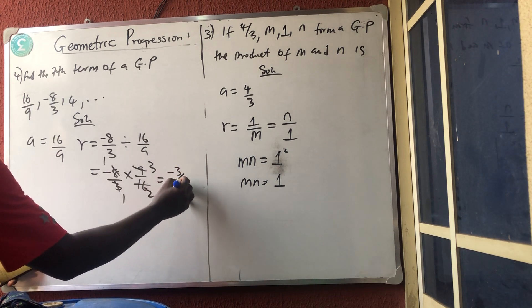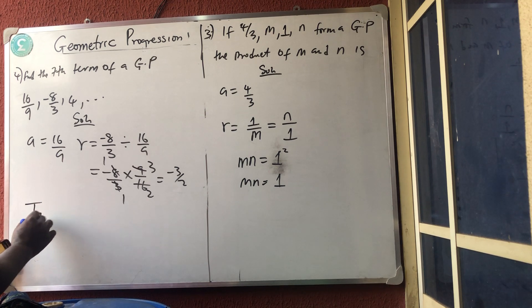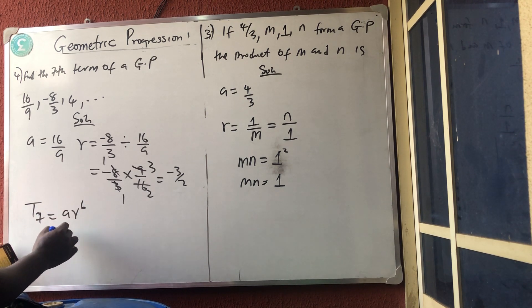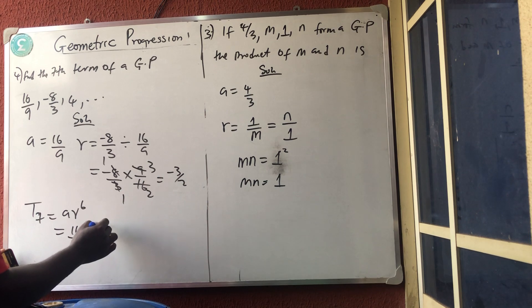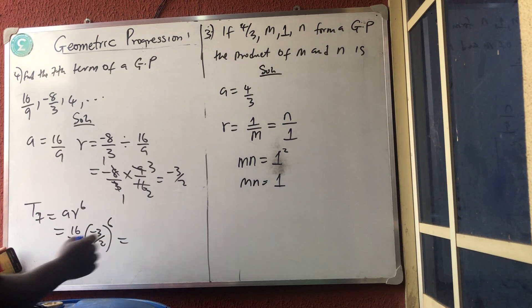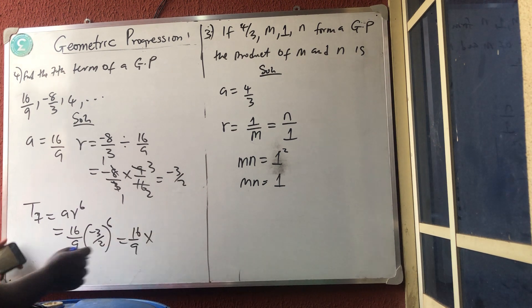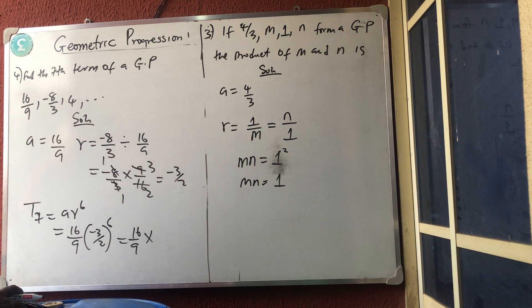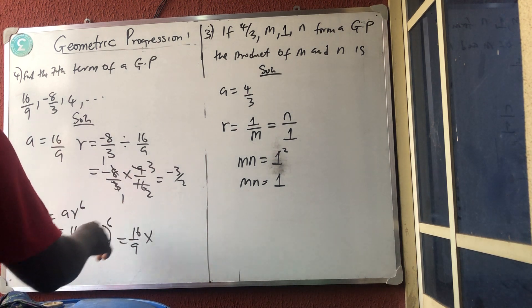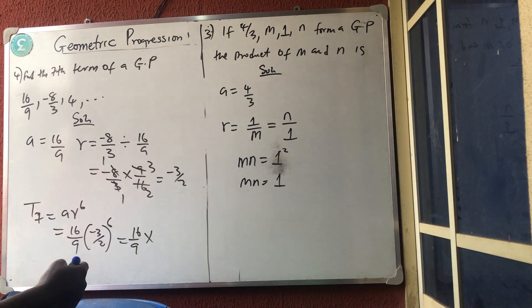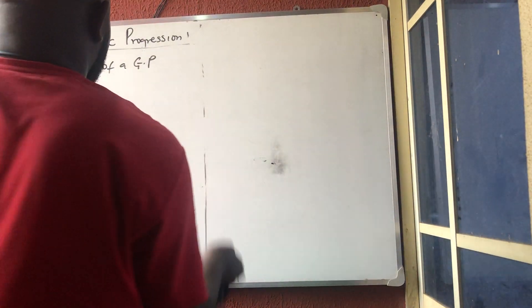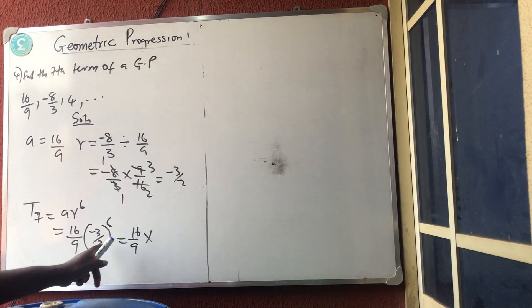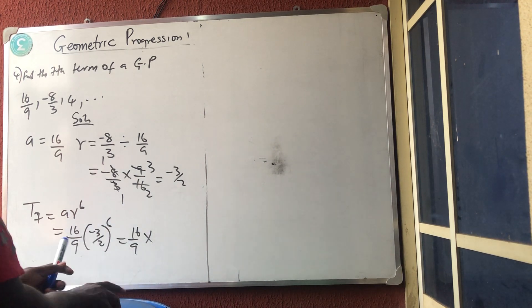So the seventh term T7 = a·r⁶ = (16/9) × (−3/2)⁶. Since the exponent is even, the negative sign becomes positive — just use 3⁶ over 2⁶. Write 3⁶ over 2⁶, then cancel with 16 over 9 and get your final answer.